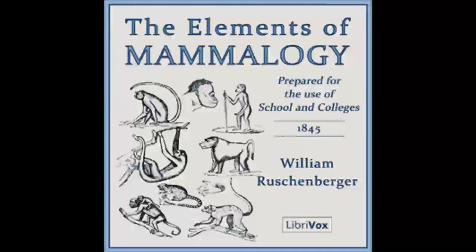Recording by Michelle. The Elements of Mammalogy by William Ruschenberger. Lesson Five: Order Carnaria. Zoological Characters, Peculiarities of Their Organization, Division into Families. Family of Chiroptera, Zoological Characters, Tribe of Bats, Peculiarities of Organization, Habits, Frugivorous Bats, the Russette, Vespertilio, Galeopithecus. Tribe of Galeopithecus. Family of Insectivora, Zoological Characters, Organization and Habits of the Hedgehog, the Shrew, and the Mole.